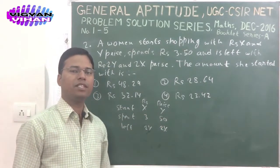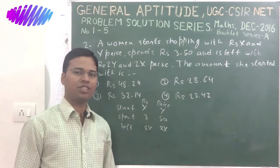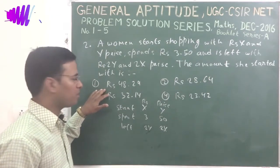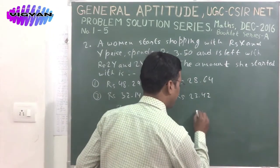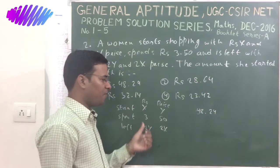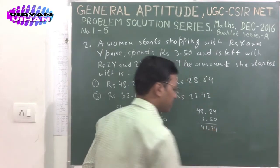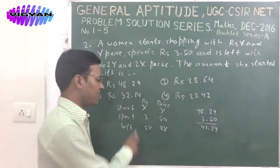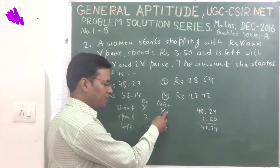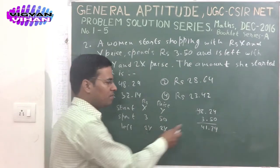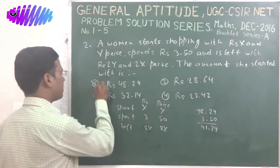In this exam, for multiple choice questions, you will have to find the correct answer no matter how you got it. Let's start from option 1: 48.24. She started with 48.24; subtract 3.50 from it, you get 44.74. Now check: the x value is 48, so y multiplied by 2 should give 48, but 24 multiplied by 2 gives 48 — wait, checking the relation: x times 2 should equal paise, but this doesn't satisfy the condition. Option 1 is not the correct answer.